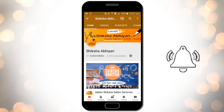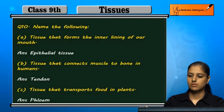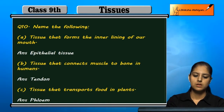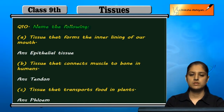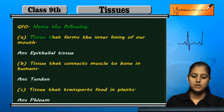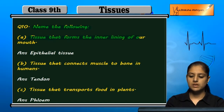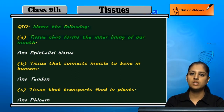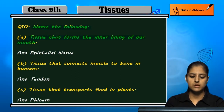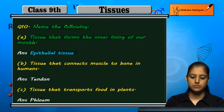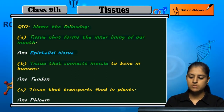Question number 10: Name the following tissues. The first tissue that forms the inner lining of our mouth is epithelial tissue. The tissue that connects muscle to bone in humans...